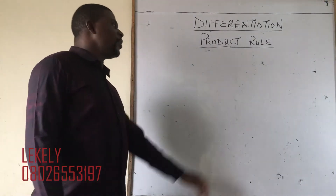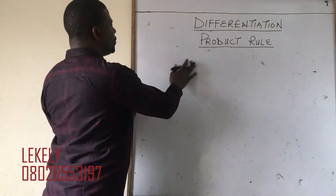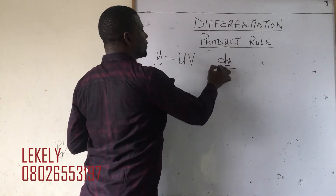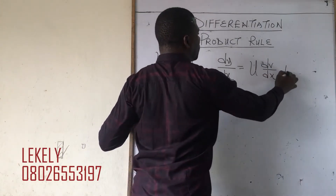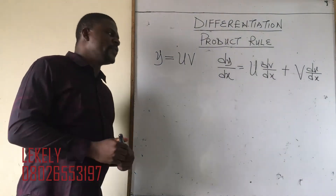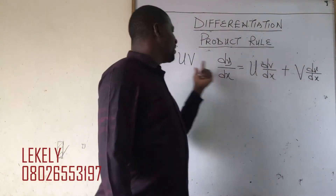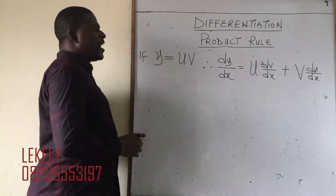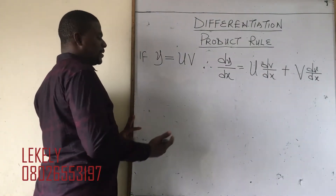We are still on differentiation and what we are looking at today is the product rule. Product rule says that if y equals u·v, then dy/dx is going to be u·dv/dx plus v·du/dx.